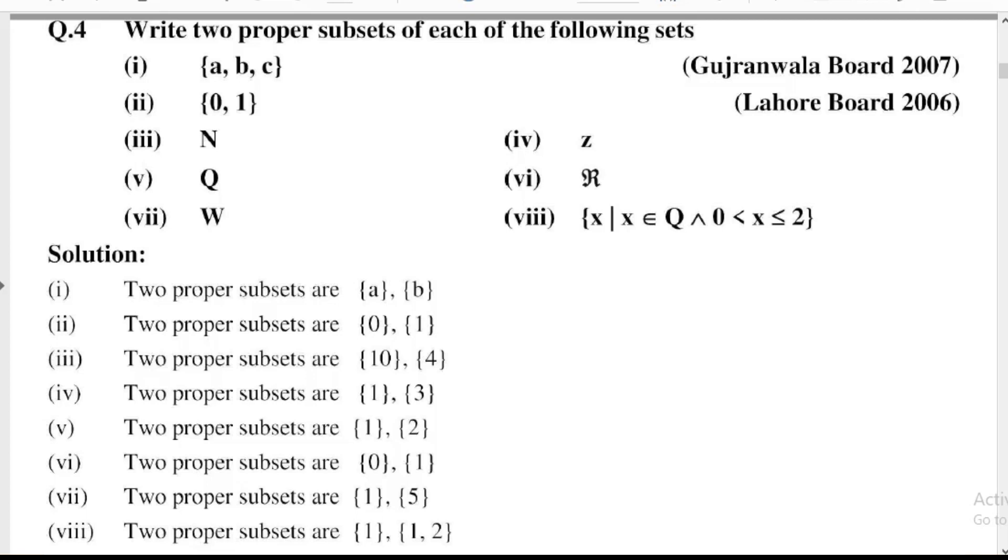Part 4: Z, where Z means integers. Integers are 0, ±1, ±2, ±3, ±4, and so on. Two proper subsets of integers are {0}, {1}.